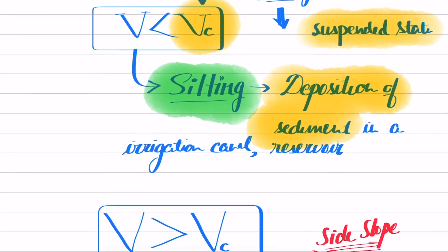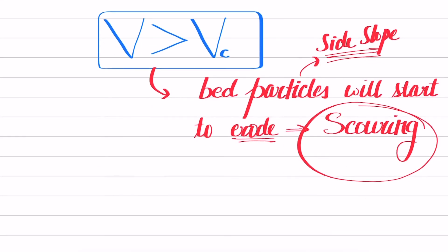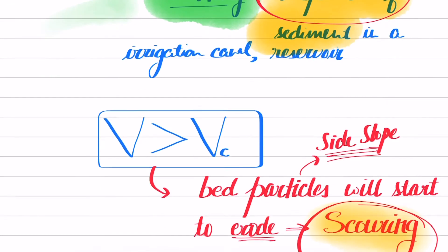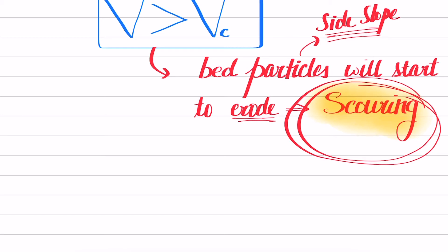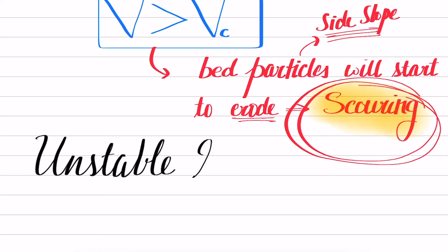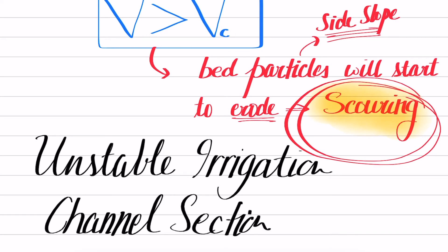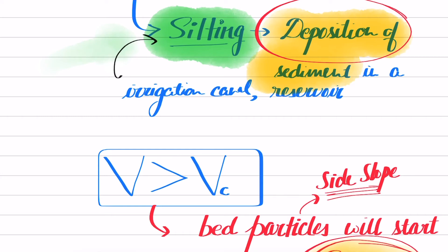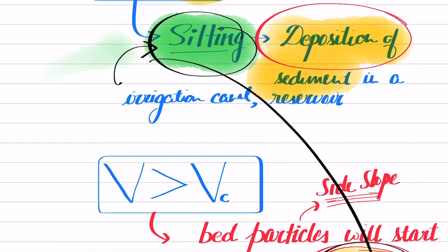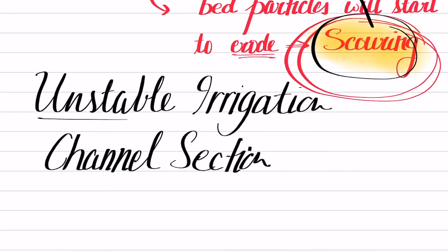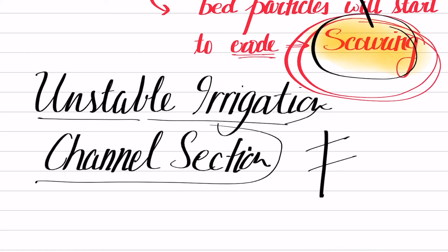From the discussion so far, we have discussed two terms: one is silting and another is scouring. Silting is the deposition, while scouring is the removal of bed particles. Both the silting and scouring phenomena will basically lead to an unstable irrigation canal section. Either the irrigation canal is subjected to silting, or scouring, or both phenomena — whatever the case, it will eventually lead to an unstable irrigation section.